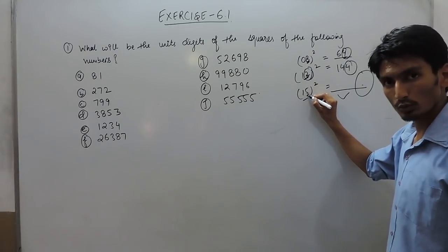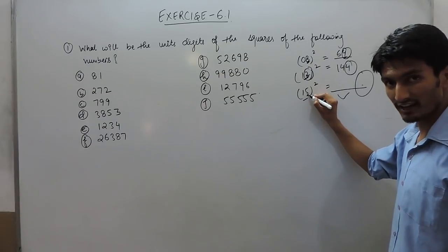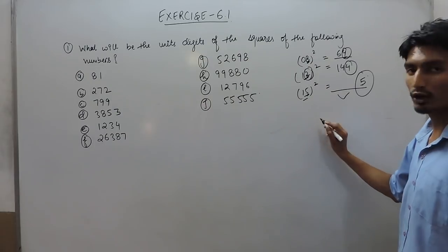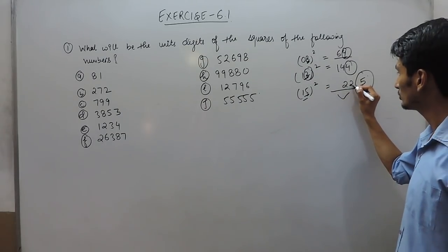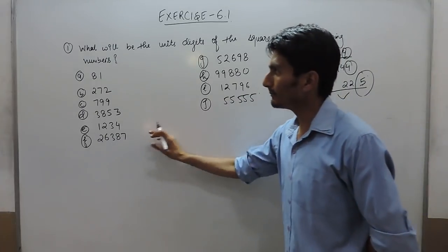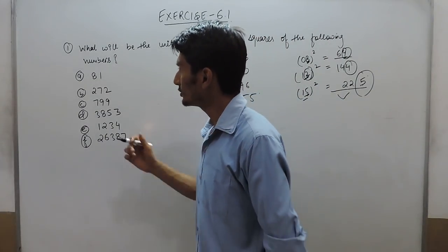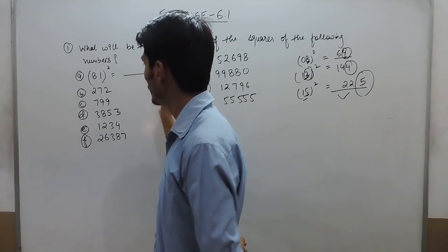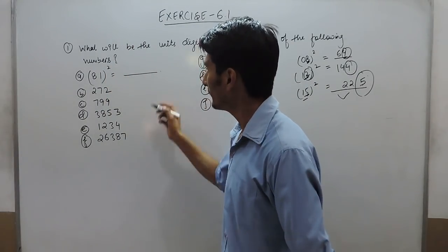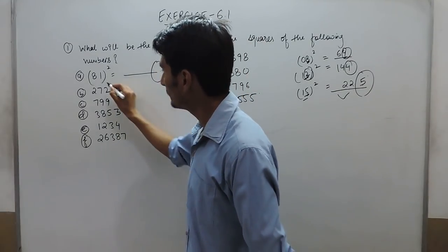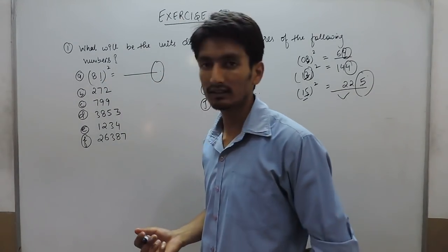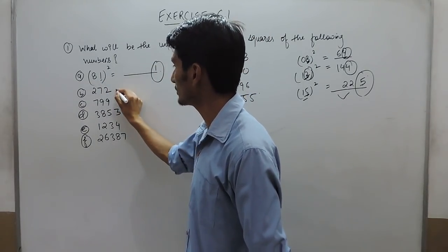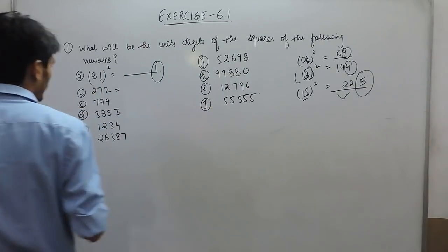So the square of 5 is 25 and the last digit is 5, so here also the unit digit must be 5, because the square of 15 is 225. Same logic applies: when we find the square of 81 it becomes a long number, but its unit digit will only depend on the last digit. The square of 1 is 1, so the unit digit of this number will be 1.